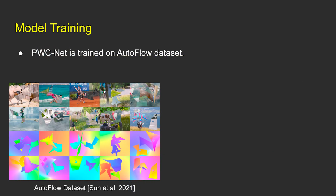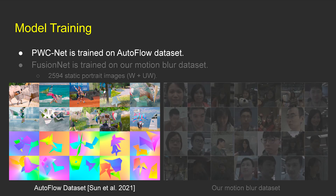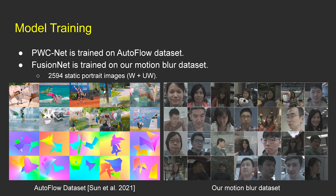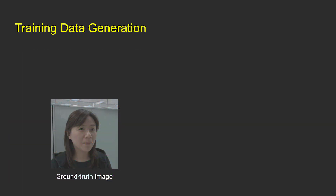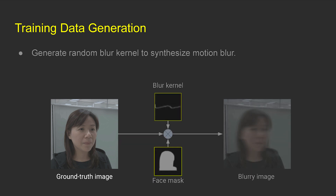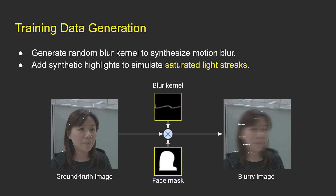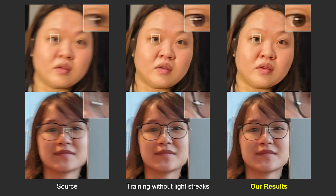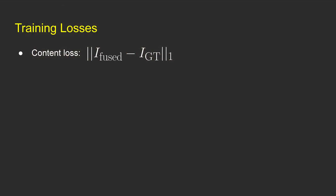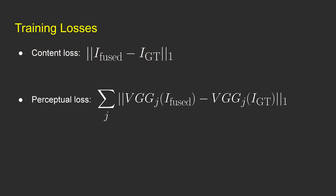We train our PWC-Net on the AutoFlow dataset. To train our fusion net, we collect about 2,600 static portrait images which have wide and ultra-wide pairs. We consider the static faces from the wide camera as the ground truths, and generate random motion blur kernels to synthesize motion blur on faces. Note that we use linear images for training and inference, applying gamma correction only for visualization. We also add synthetic highlights on the ground truth image to simulate saturated light streaks after motion blur. We found that the model trained with synthetic light streaks can reduce the saturations caused by eyeballs or glass reflections and generate more natural results with fewer ringing artifacts. Our fusion net is trained with a content L1 loss, a perceptual loss, and a color consistency loss.